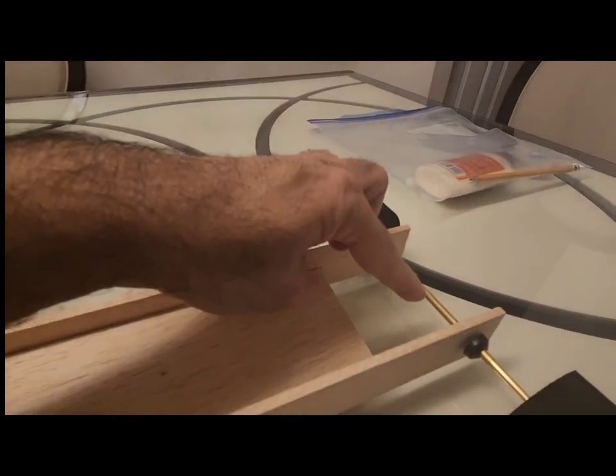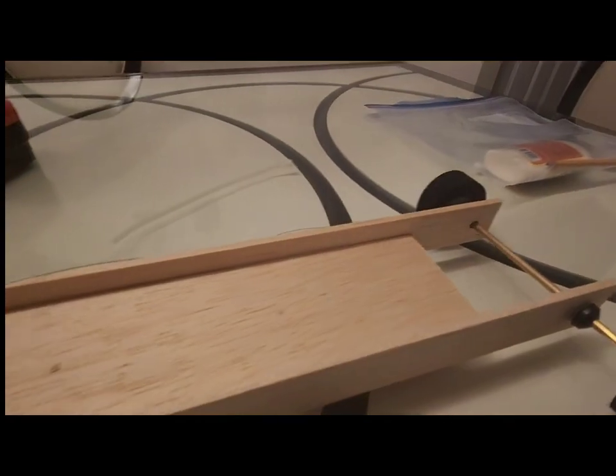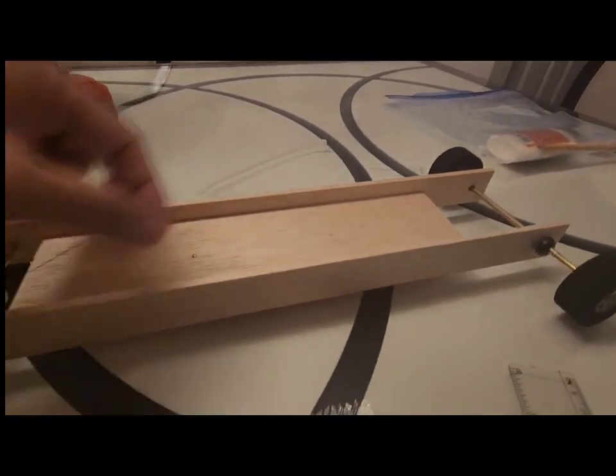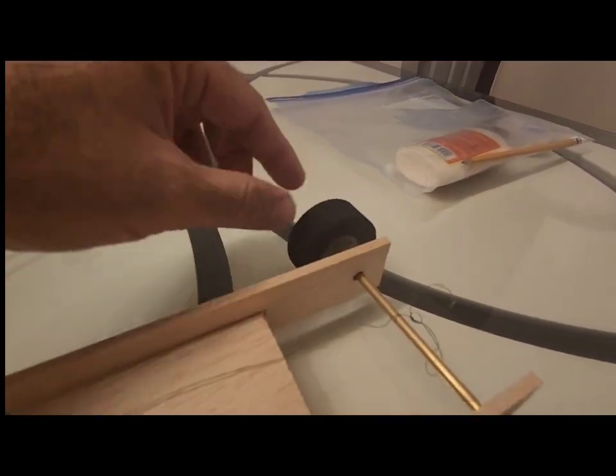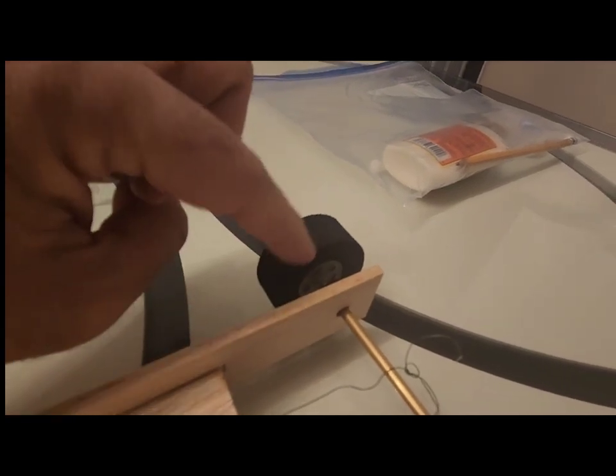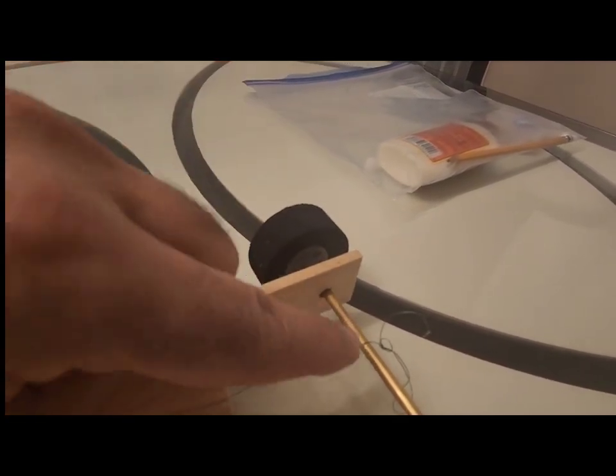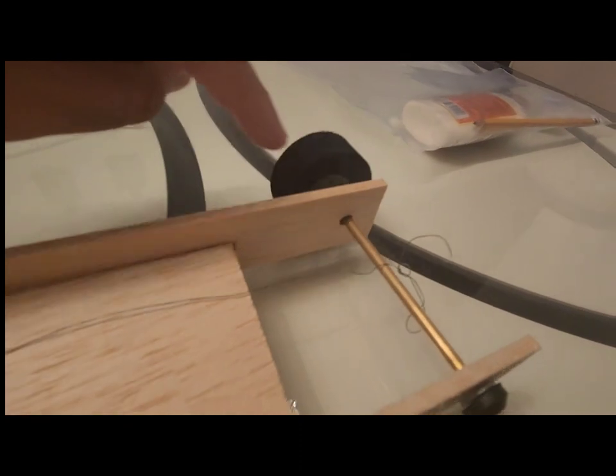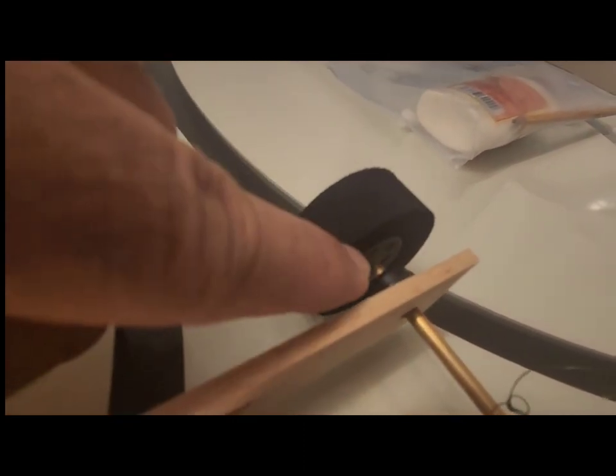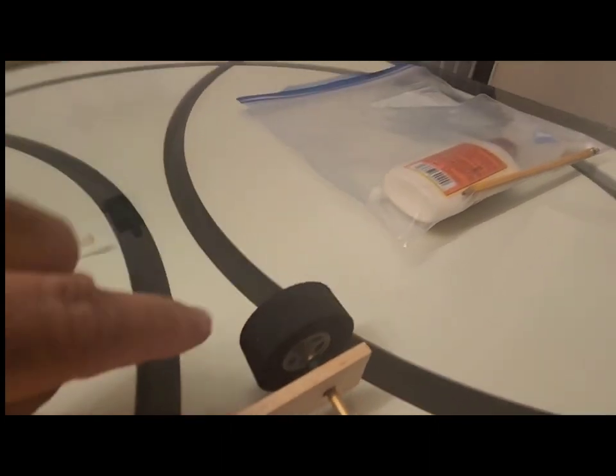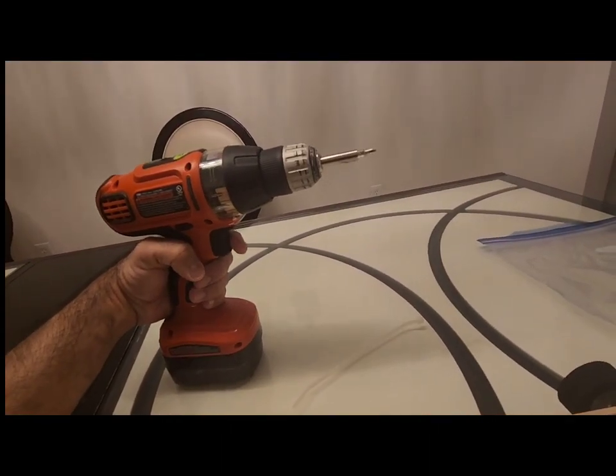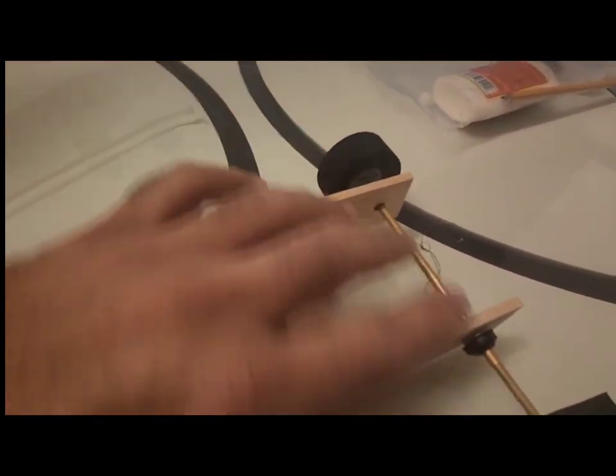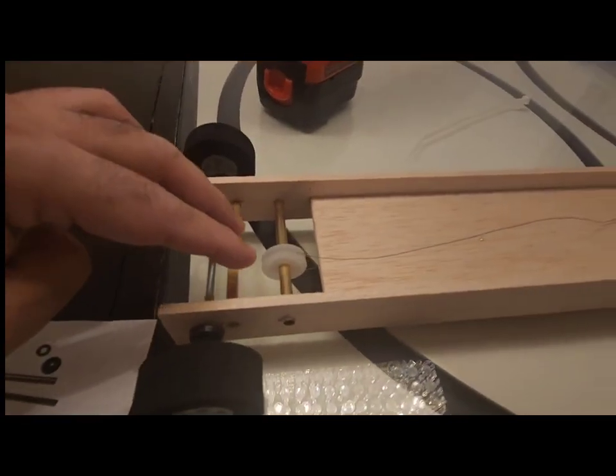One quick thing - the rear wheels could not go into the wheel, into the axle. Sorry, the rear axle could not go into the wheel's central hole easily. I had to use a drill to make the hole wider. This was only a problem on the rear wheels - this is the front and this is the rear.